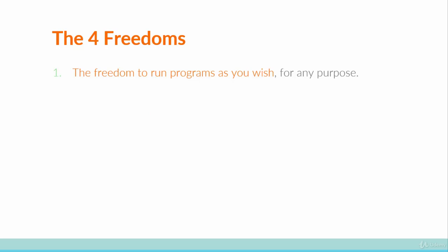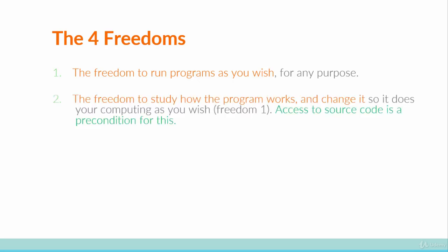The first freedom is the freedom to run the program as you wish for any purpose. The second freedom is the freedom to study how the program works and change it so that it does the computing as you wish. So freedom one is about running the program as you wish, and freedom two is about studying how the program works and changing it so that it does as you wish.